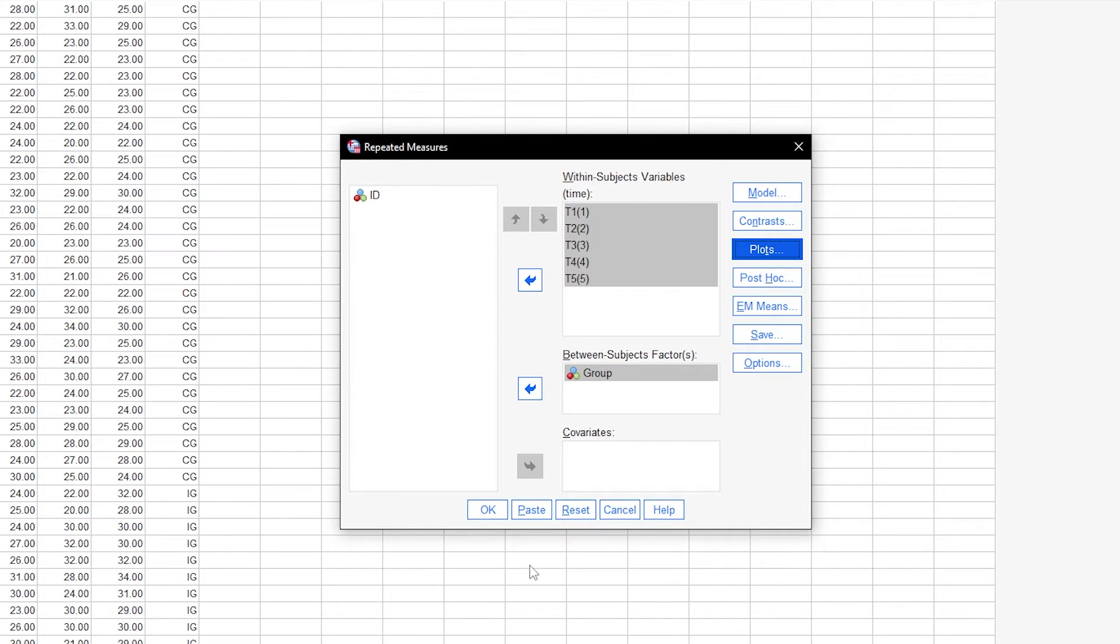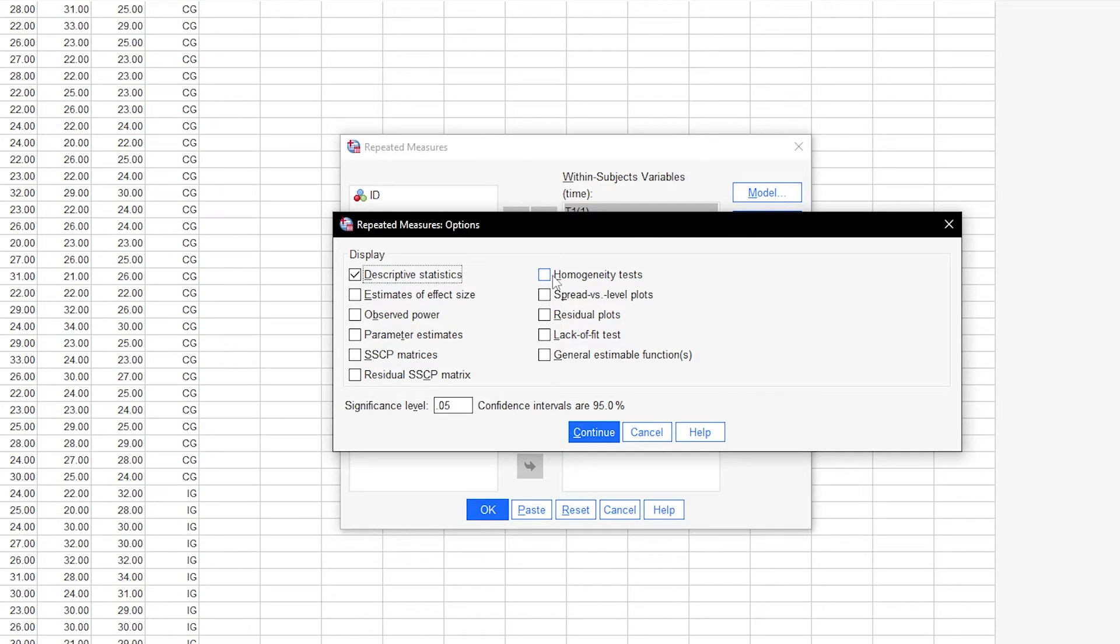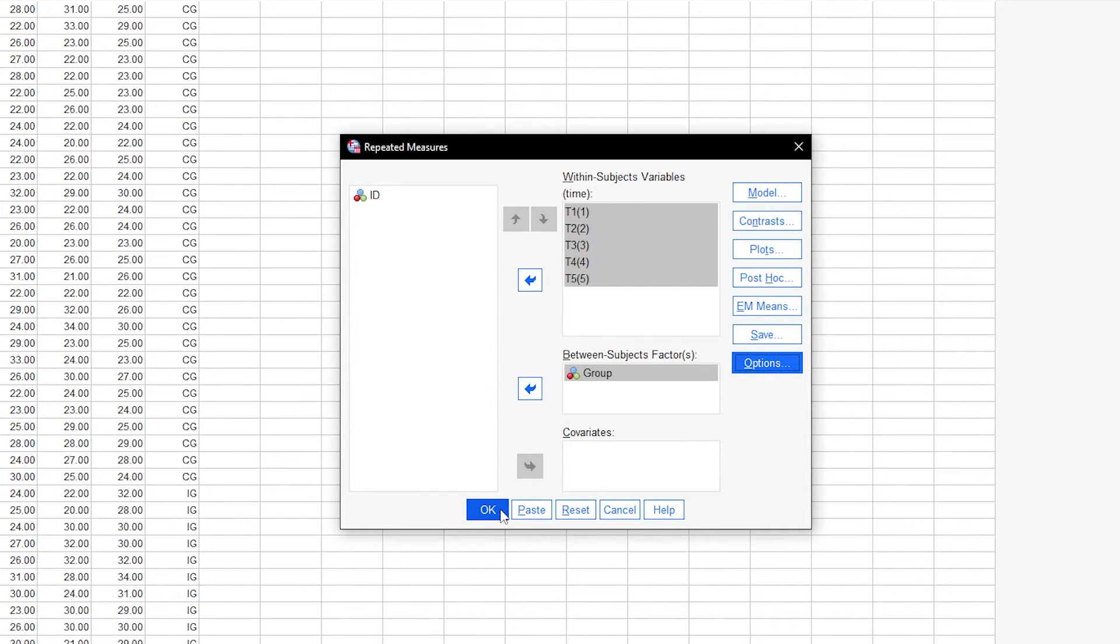We request descriptive statistics via the options button. As already mentioned, homogeneity tests are the subject of other videos. You can also tick estimates of effect size, which I will explain separately for the sake of clarity. At this point, this is all we need and can continue to the results.